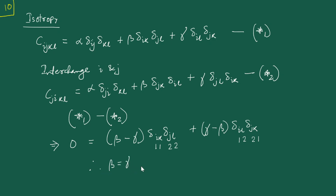In a similar fashion, if we go back to the first relation and interchange j and l, we again end up with the relationship that beta equals gamma. So overall, although alpha, beta, gamma were appearing as three independent constants, in reality beta equals gamma, and indeed there are only two independent constants, as mentioned in the previous lecture.